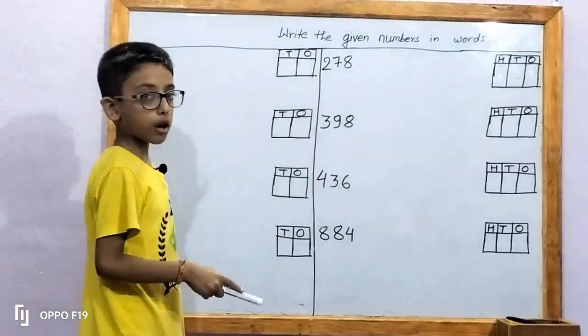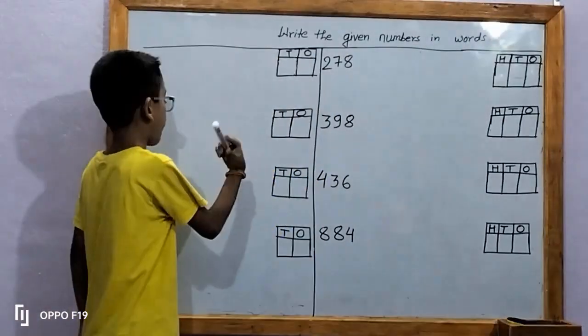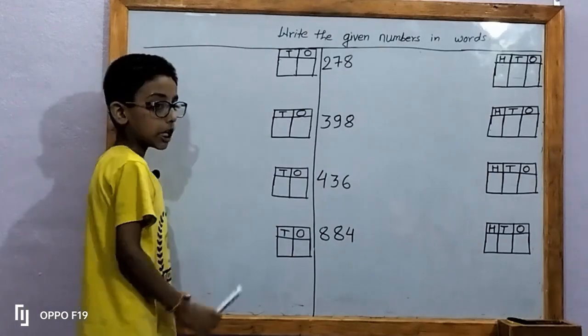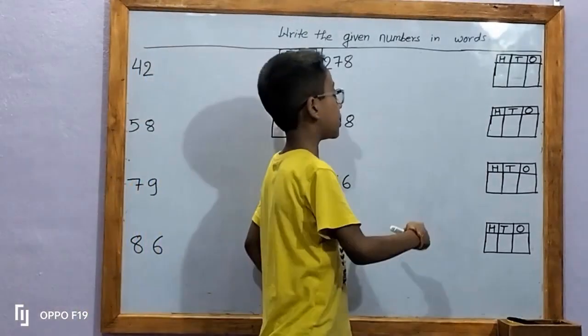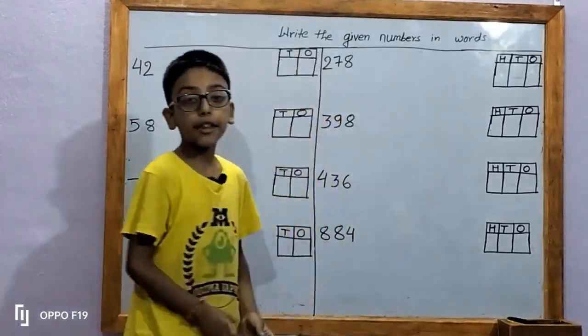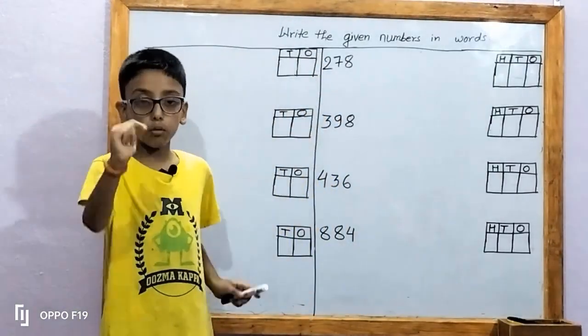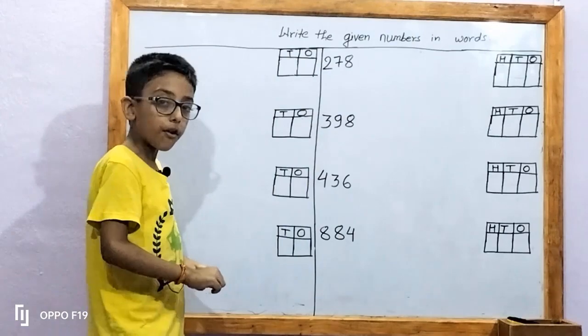First, we're going to start from two-digit numbers. After that, three-digit numbers. Let's start from two-digit numbers first.